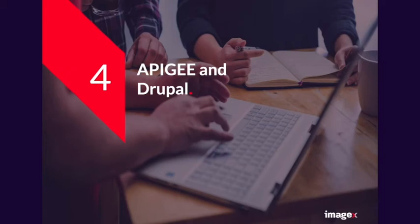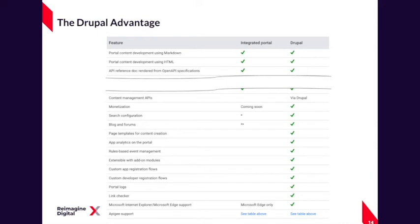Next, let's talk about Apigee and Drupal itself. There are a lot of advantages for using Drupal with Apigee. Many are due to the fact that Drupal is just a great content management system — you get things like search configuration, blog and forums, custom content type integration, and extensibility through the module system. There are also key advantages specific to Apigee: monetization, analytics integration with the API platform, a rules-based event management system, custom registration for both the application and developer flows, and of course Apigee support.